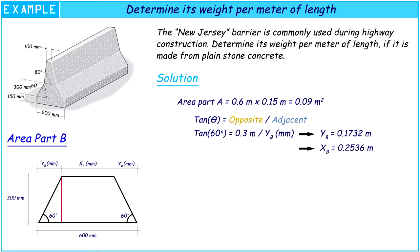After that, we can know XB, that it's equal to 0.2536 meters. Now the area of Part B is equal to 0.128 square meters.